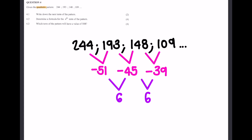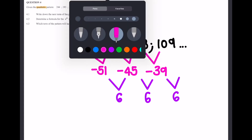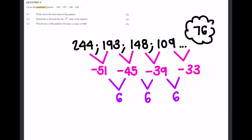The first question says write down the next term in the pattern. I always like to find the first and second differences before getting the next term, because that sets it up for finding the nth term and makes it easier. I know that negative 39 plus 6 gives me my next first difference of negative 33, and then 109 minus 33 gives me 76. So the next term is 76.